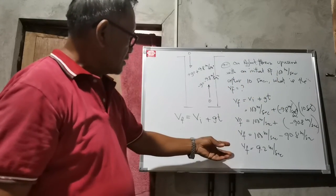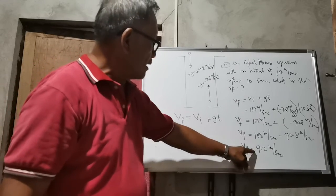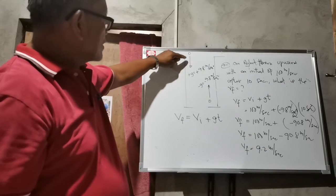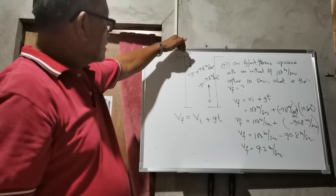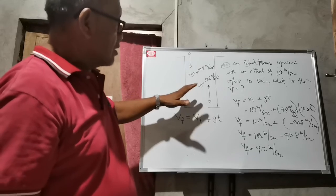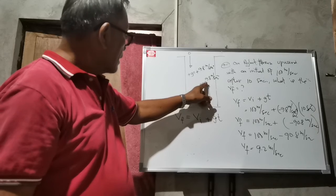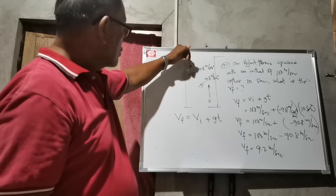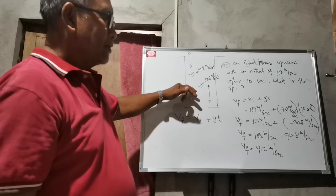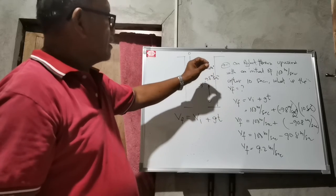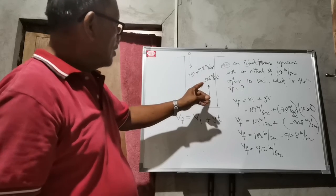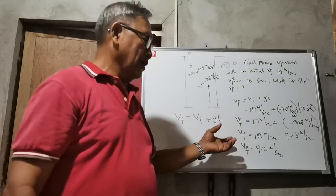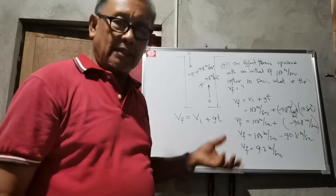You will observe that the initial velocity is 100 — very fast — while after 10 seconds the final velocity is only 9.2. It gets slower and slower as it goes higher. In the first example, as the object was thrown downward and gets nearer to the ground, it gets faster and faster because of the pull of gravity. The gravity helps the object going downward, while for an object going up, the force of gravity decreases its velocity. That will be enough for falling bodies, and we will discuss another topic next time.